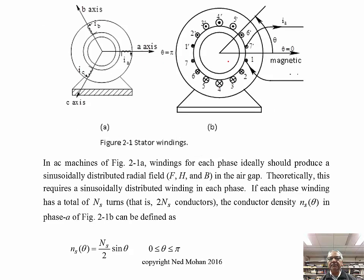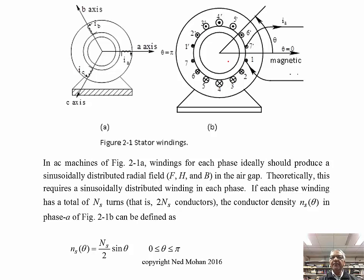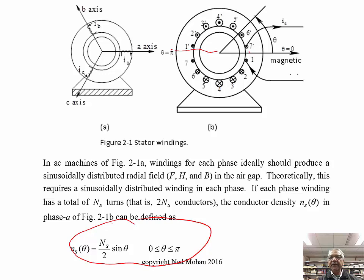Assuming a sinusoidally distributed winding, conductors have different density as a function of theta — some are shown with a little circle and some with a bigger circle, where there is higher conductor density. We assume this conductor density is distributed sinusoidally. We can represent this conductor density as a function of theta from zero to pi by this expression, where n sub s equals the number of turns per phase. It's a function of sine theta — zero along the magnetic axis and highest at 90 degrees.